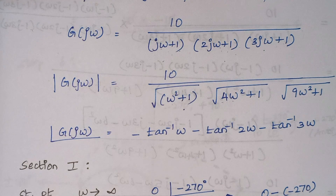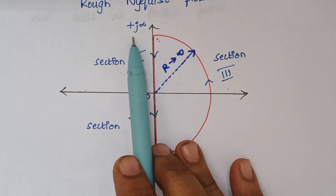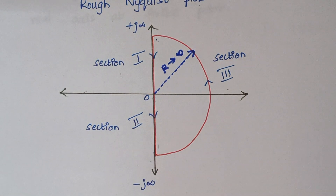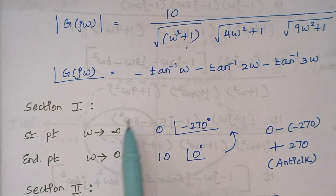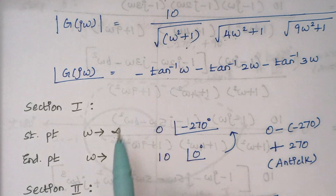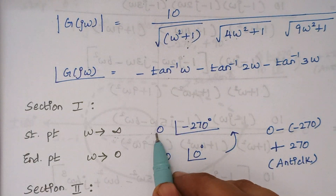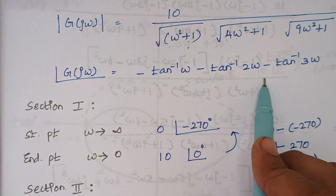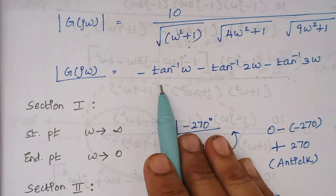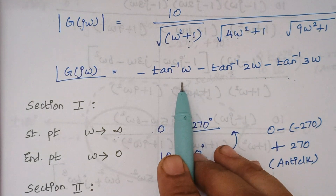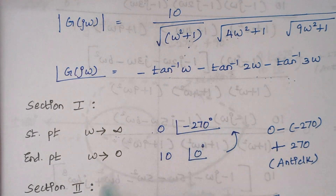Now we analyze section 1. It starts at +j∞ and ends at 0. When we substitute ω = ∞ in the magnitude, anything divided by infinity is 0. When we substitute ω = ∞ in the phase expression, tan⁻¹(∞) = 90°. So we get −90 − 90 − 90 = −270 degrees.